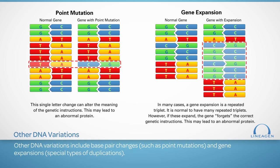Other DNA variations include base pair changes, such as point mutations. A point mutation occurs when a single base pair change can alter the meaning of the gene instructions, which in turn can lead to an abnormal protein and perhaps a change in the trait. Another type of DNA variation is gene expansion, which occurs when a specific part of the gene is repeated or duplicated many times. This can also alter the meaning of the gene instructions, leading to an abnormal protein or a change in the trait.